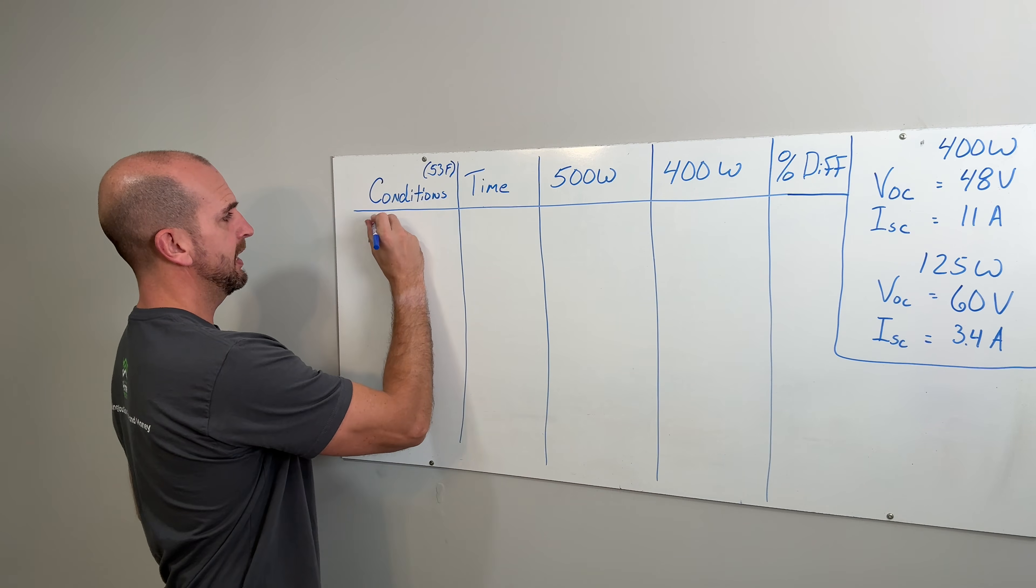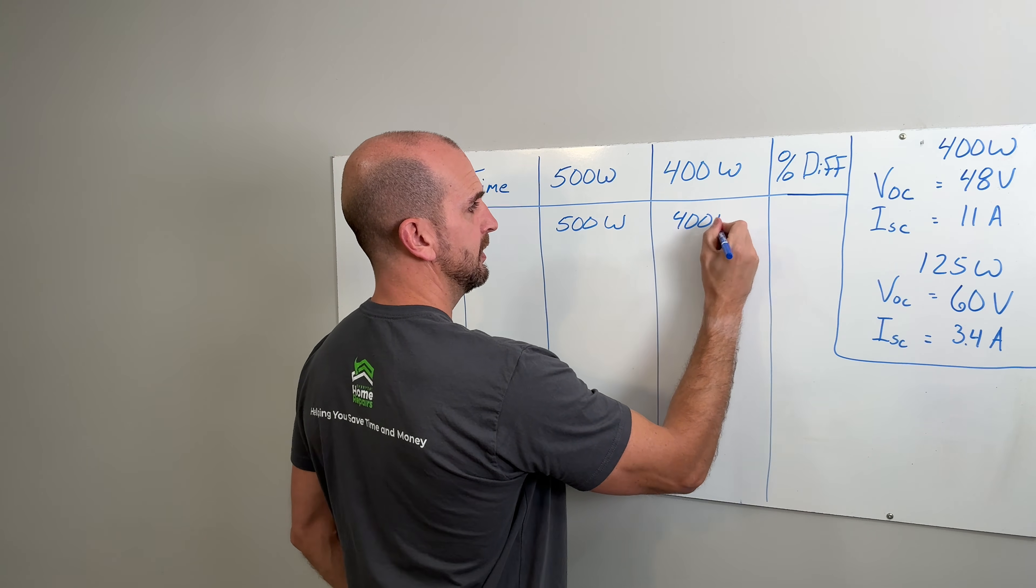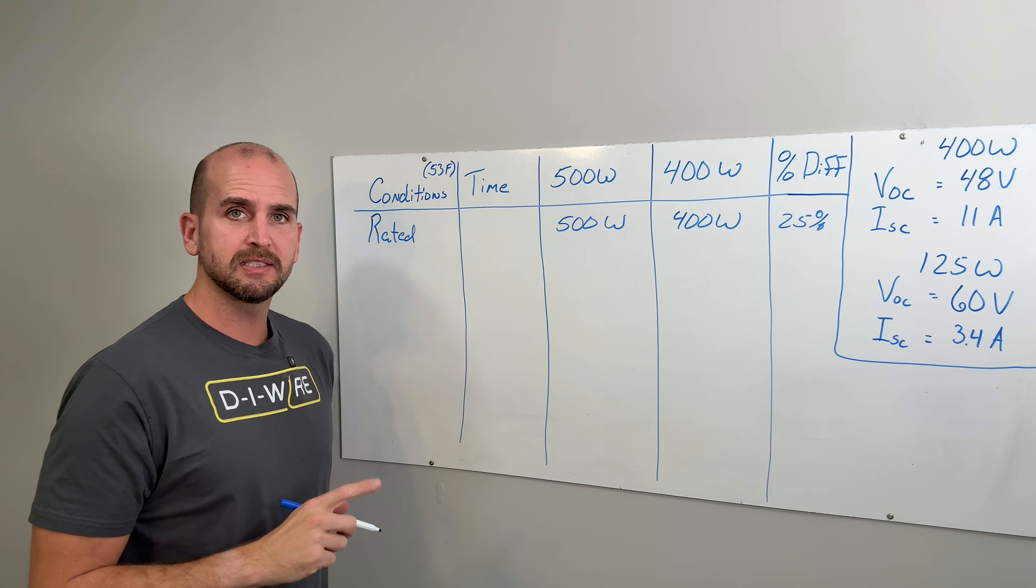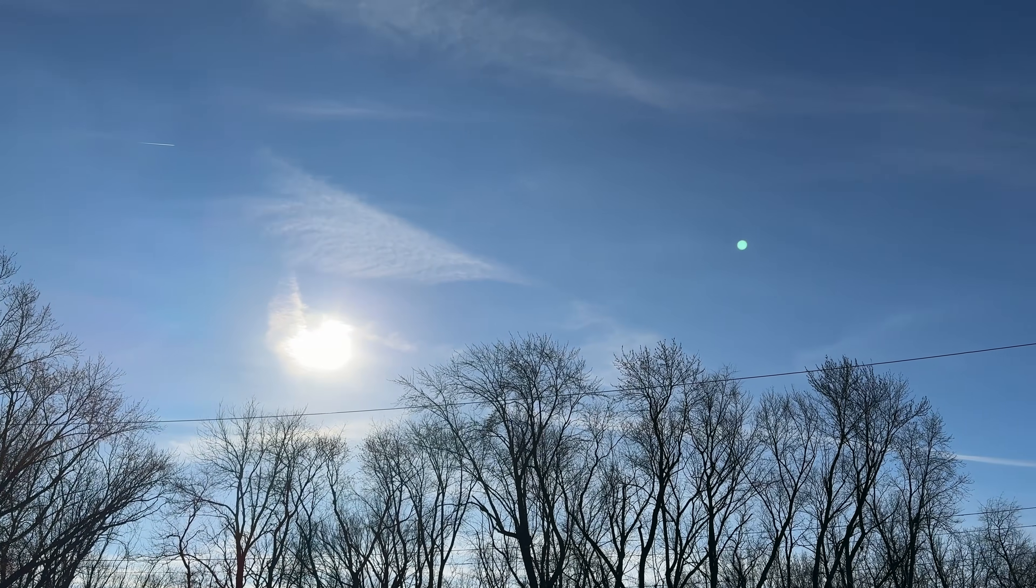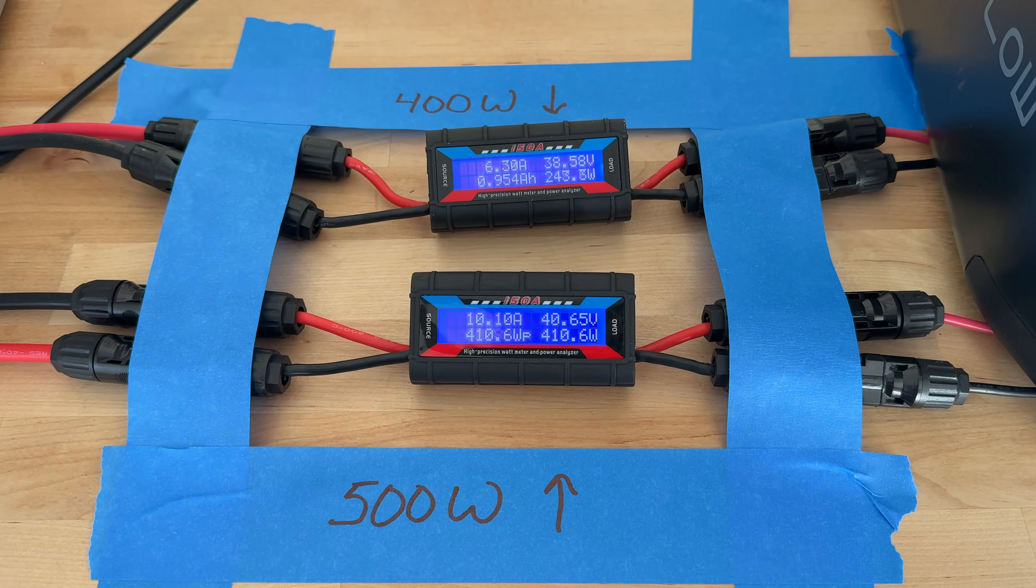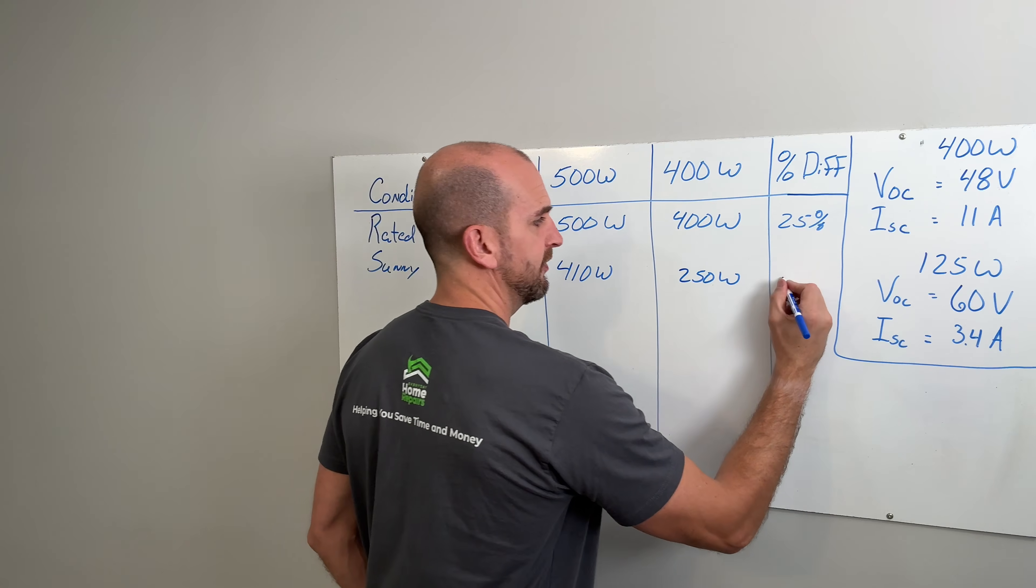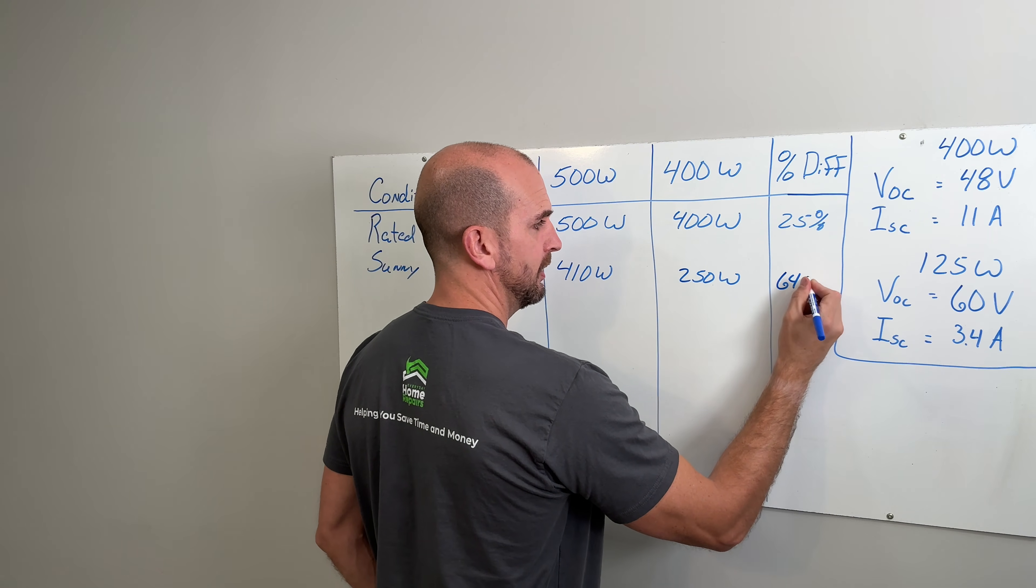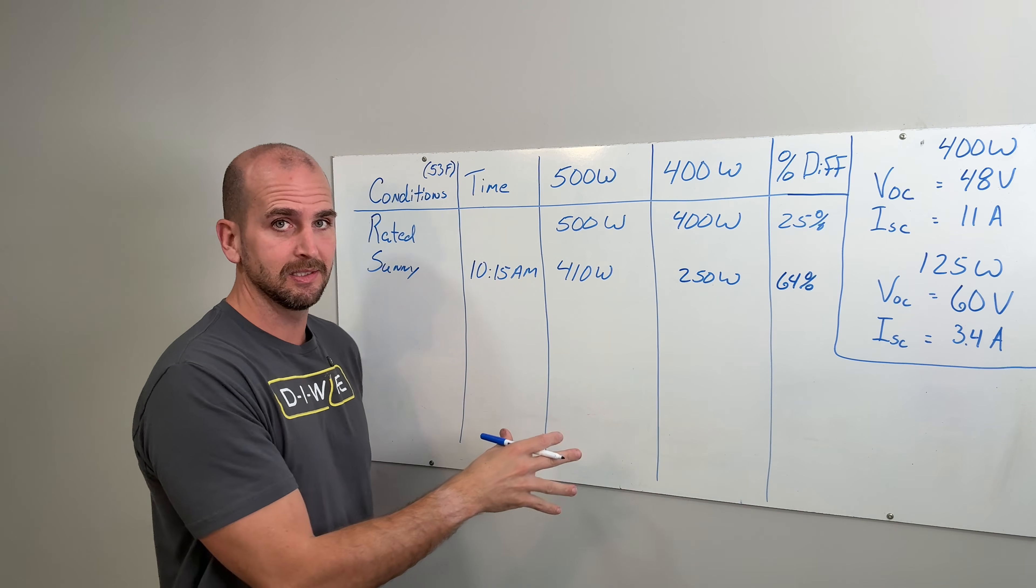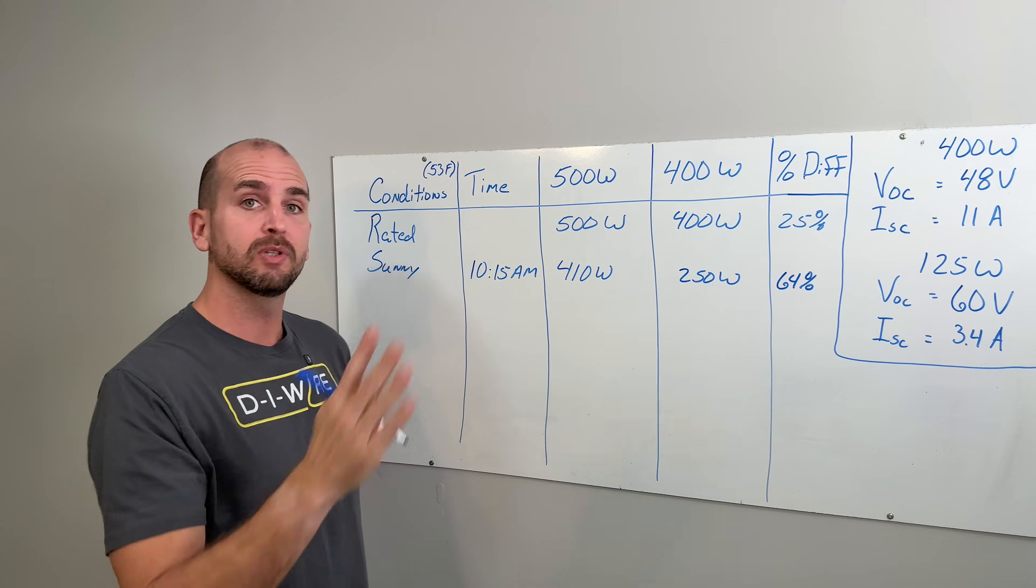Right from the top, if we just look at our rated expectations, we would do 500 watts, 400 watts, and then we would expect 25 percent more power coming out of our modular setup. Our first testing scenario was with sunny conditions at 10:15 AM where we saw 410 watts out of the 500 watt panel and 250 watts out of the 400 watt panel. Looking at a percentage difference, that is going to be 64 percent difference. So quite a bit more than what we were expecting if we just go off our rated numbers. That's why you want to test these things to understand that sometimes what is on the marketing literature is not what you're going to see in real life.